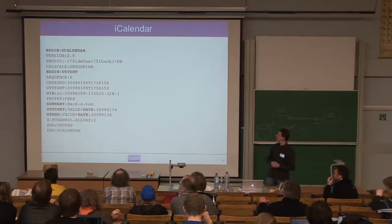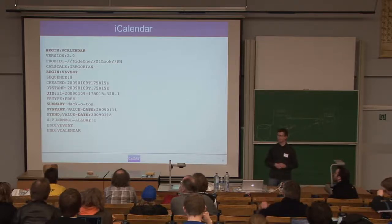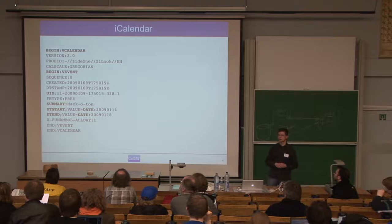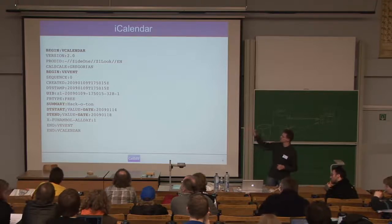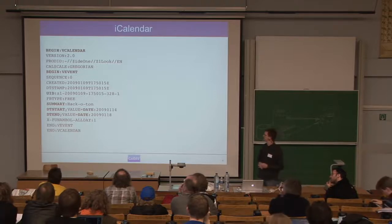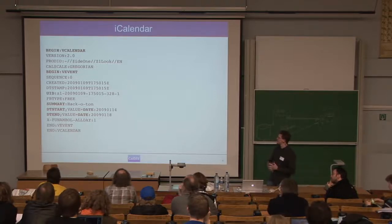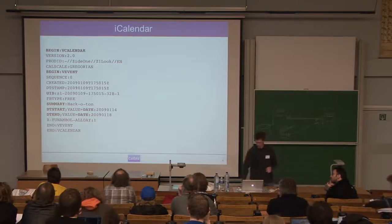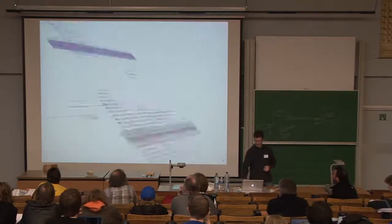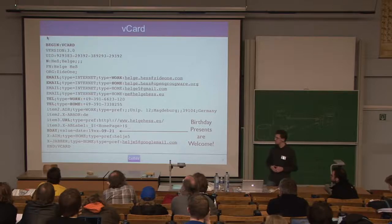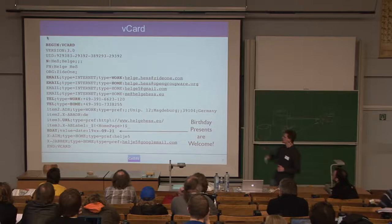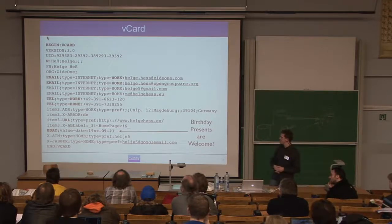As for the parts: iCalendar is very common. Most developers probably know how it works because it's used in open source clients anyway. It's a very simple text-based format which contains the necessary information. The same goes for vCard, which is almost the same format but for contact data like telephone numbers, email addresses, and birthdays.